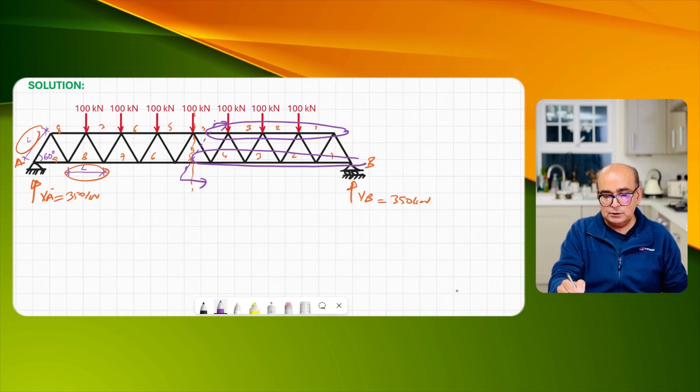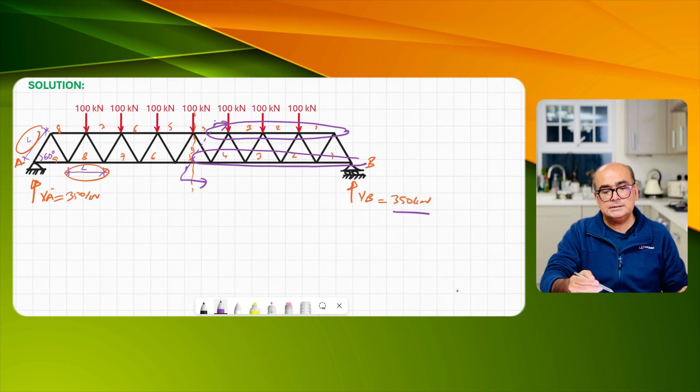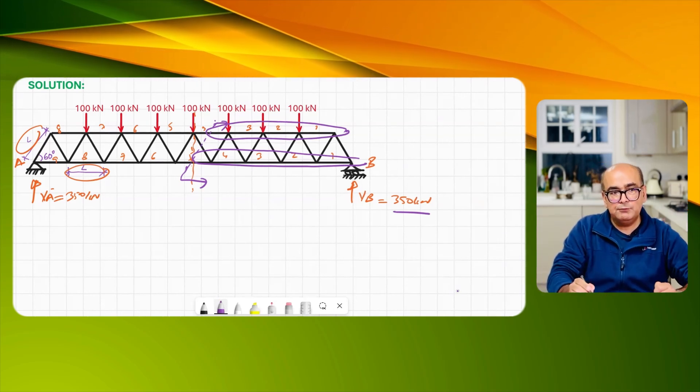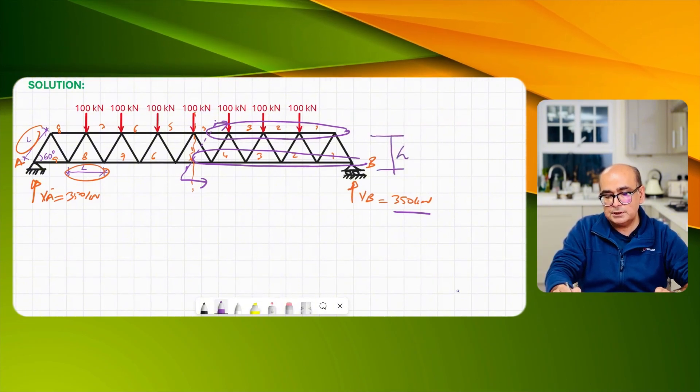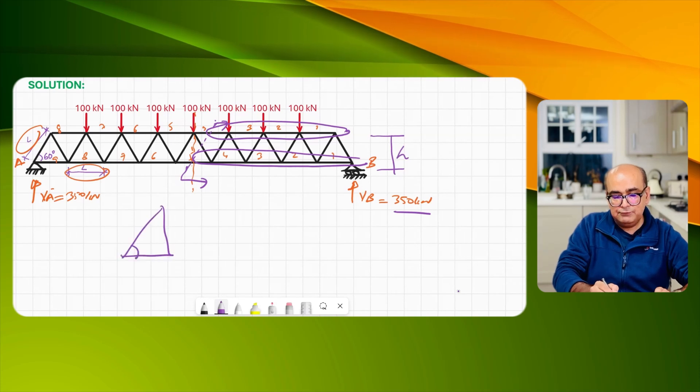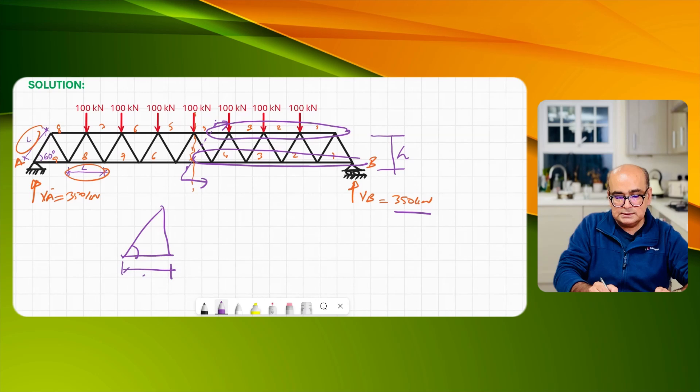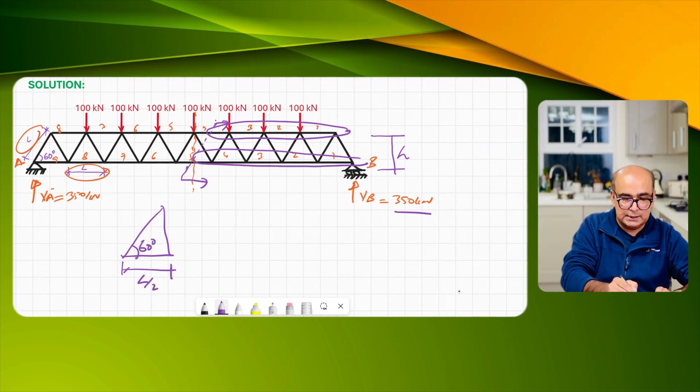When we take a cut then after that we will find out the member forces but here I want to find out the depth of the truss which is h. This is half of the equilateral triangle so I will say that this length is L over 2.